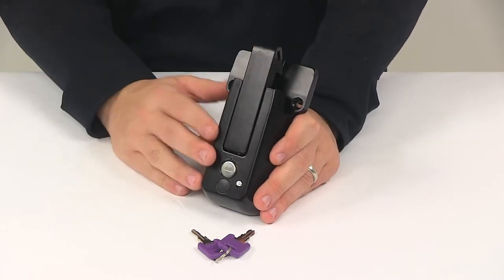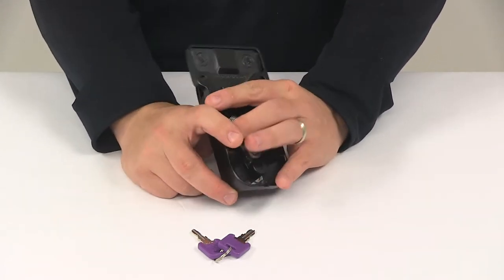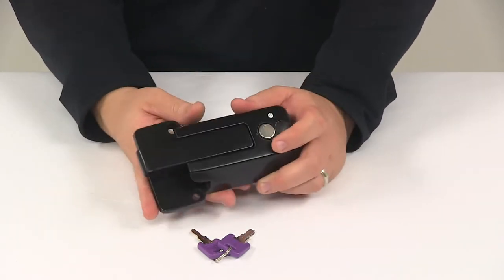Very simple installation as well. This lock attaches to your trailer in place of the hasp assembly. It can be installed horizontally or vertically to fit your application, whatever works best for you.